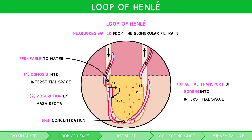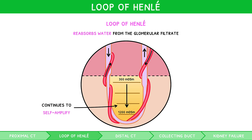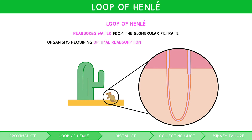However, since the ascending limb is impermeable to water, water cannot exit, thus raising the solute concentration in the interstitium too. This therefore results in further water reabsorption from the descending limb, making the filtrate entering the ascending limb even more concentrated, and so further amplifying the effect. The concentration in the medulla continues to self-amplify this way, known as the countercurrent multiplication system, eventually reaching a maximum solute concentration. It therefore follows that an organism requiring optimal reabsorption of water will have a long loop of Henle, which is indeed seen in animals living in arid conditions, such as desert mice.